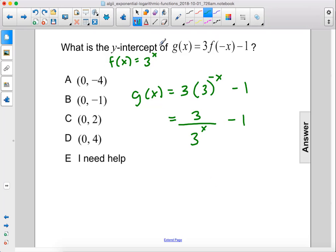So what's the y-intercept? Well, let's plug in 0 for x. So g(0) is 3 divided by 3^0 minus 1.